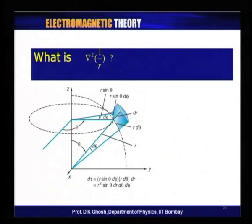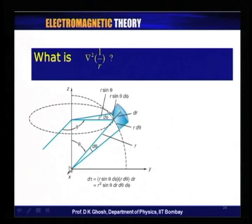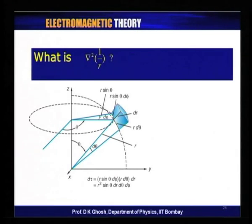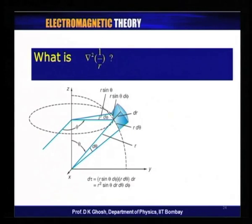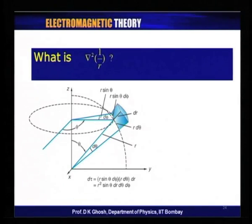The volume element in this spherical polar coordinate system: the length element in the radial direction is dr, in the theta direction it is r d(theta), and in the azimuthal direction a length element is r sin(theta) d(phi). Therefore, the volume element d(tau) is r² sin(theta) dr d(theta) d(phi).